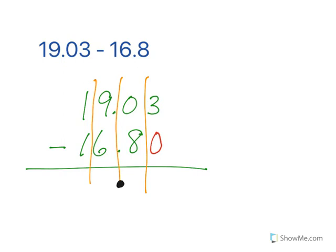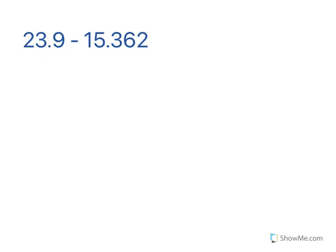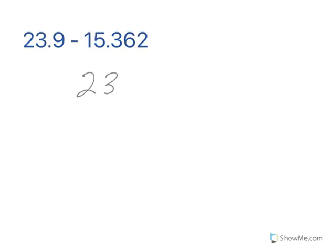And now we subtract 3 minus 0. Again I start right to left. So 3 minus 0 is 3. 0 minus 8. That does not work so I'm going to borrow. So 9 goes to 8. And that means I borrowed 10. So I just throw a 1 in front. 10 minus 8 is 2. 8 minus 6 is 2. 1 minus 1 is just 0. So my final answer is 2 and 23 hundredths. Let's do a couple more here and we'll just kind of fly through them.